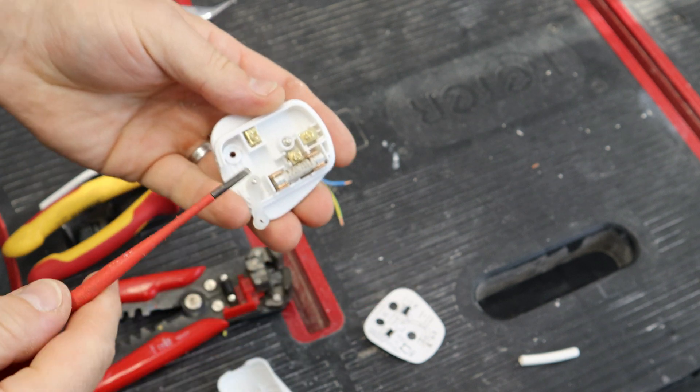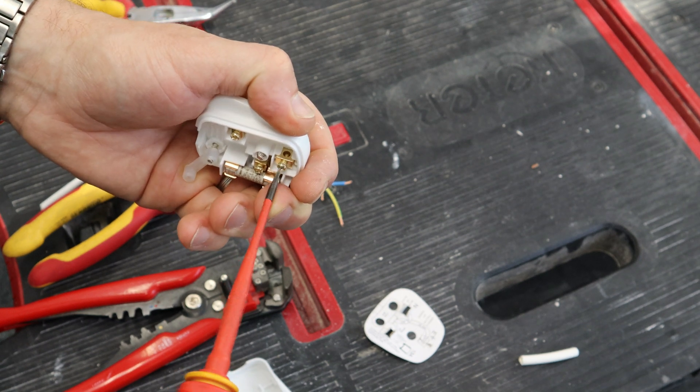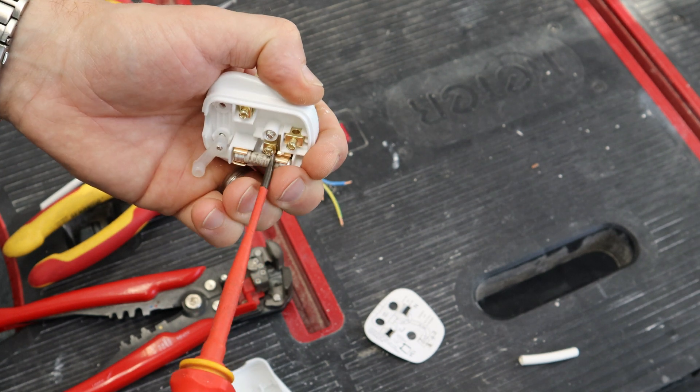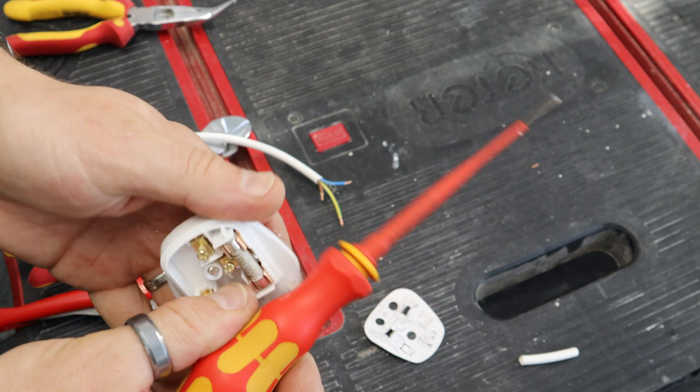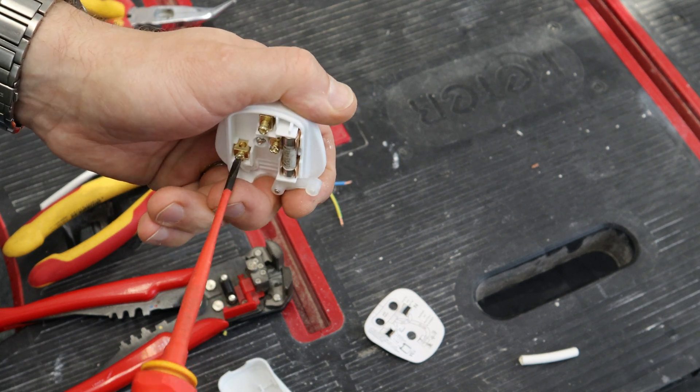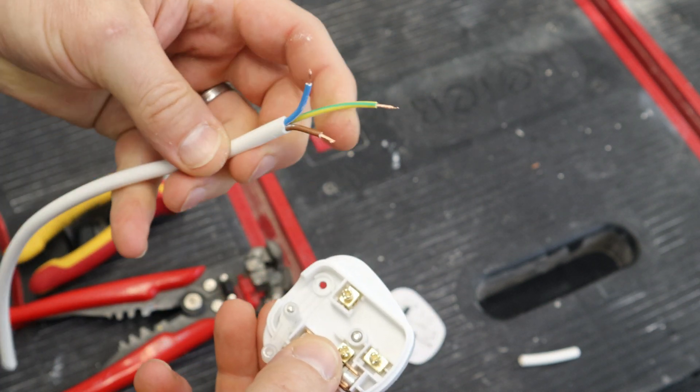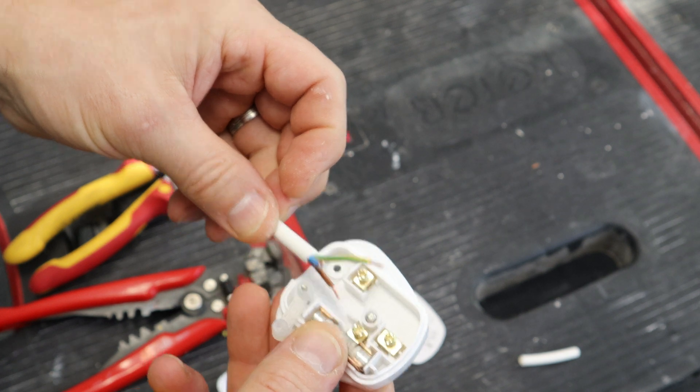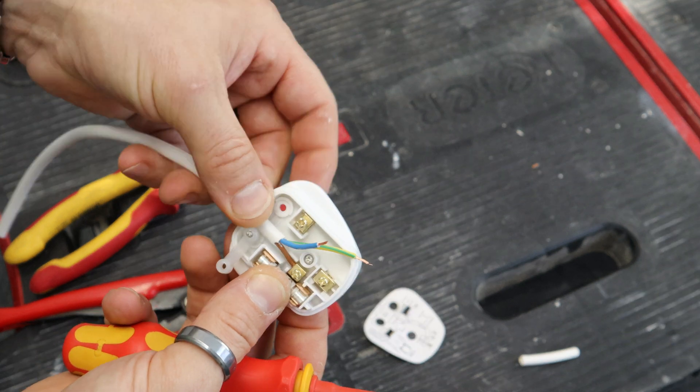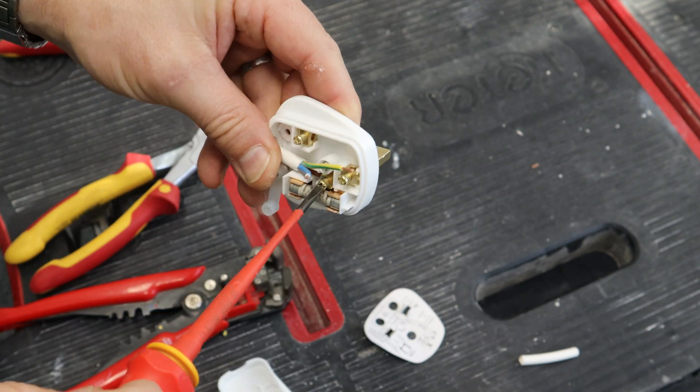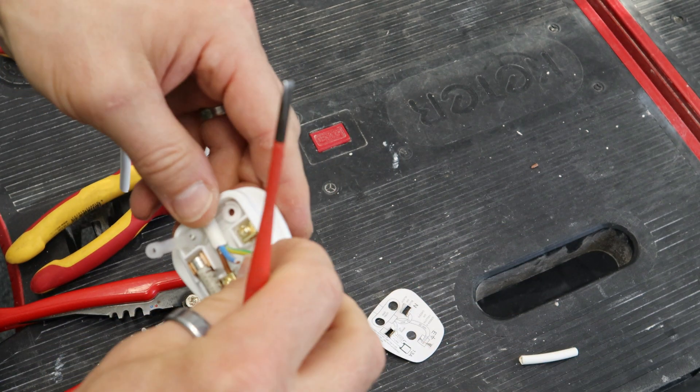Like so. So here we have the live, neutral, and earth. So we just have to undo the grub screws. Take it almost all the way, but obviously don't take them all the way out. Do this for all three. Now taking your cable, generally easier to start with the live. And just slide it in. And then do it up. Don't over tighten them, but at the same time give it a little tug, just to check that it fits okay.